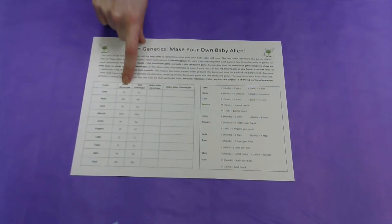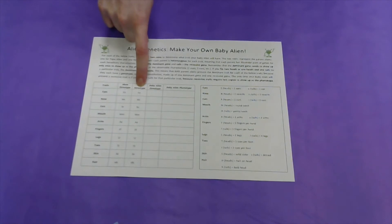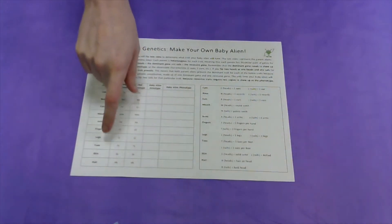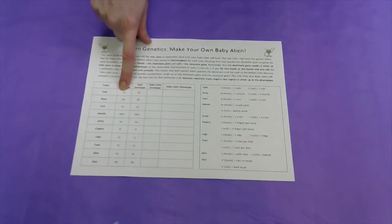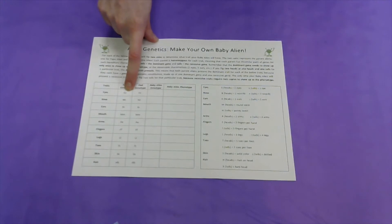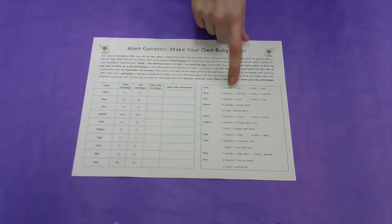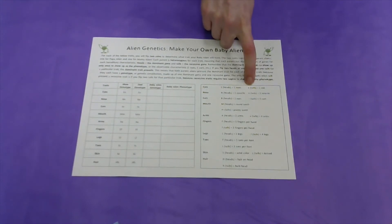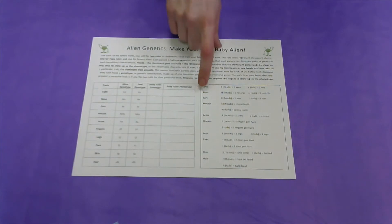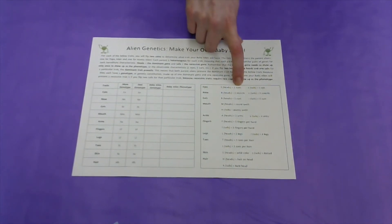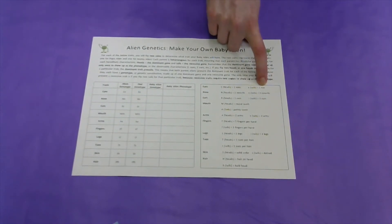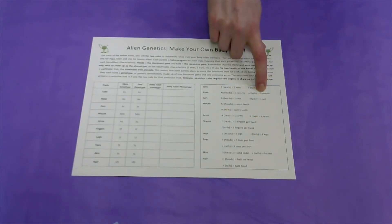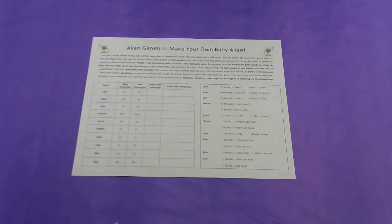In these columns you will note the mother alien genotype and the father alien genotype. You will notice that all of these genotypes are composed of one capital letter, which stands for the dominant trait, and one lowercase letter, which stands for the recessive trait. In this chart over here, you can see what the dominant and recessive traits correspond with for each of the characteristics. For eyes, the dominant trait is two eyes and the recessive trait is one eye. For the nose, two nostrils is dominant and three nostrils is recessive. Please look over the rest of the chart to see what the dominant and recessive traits are.